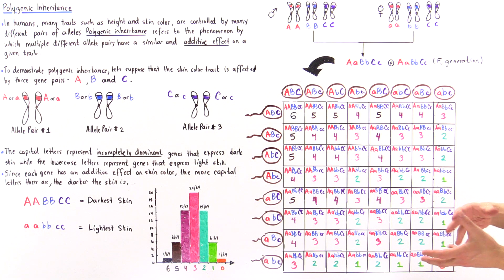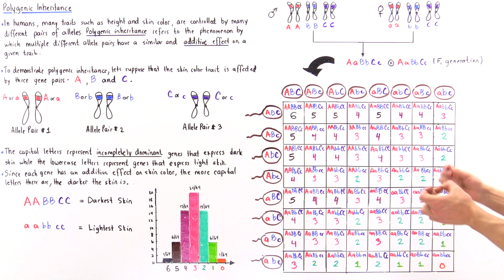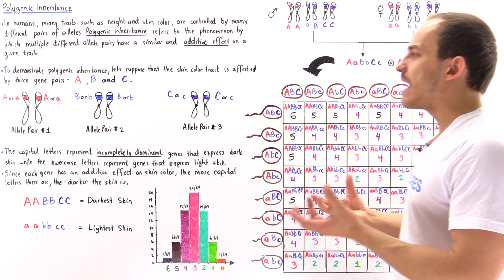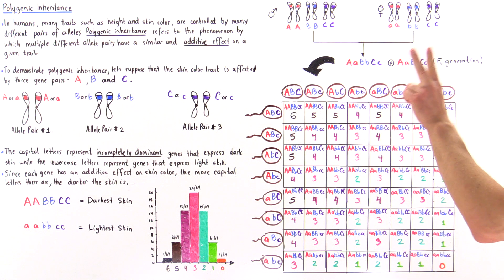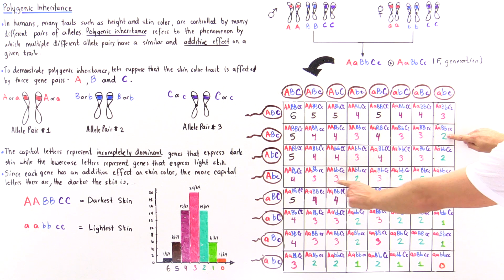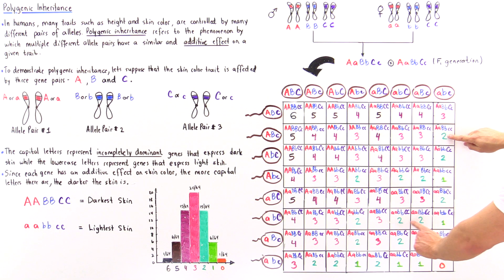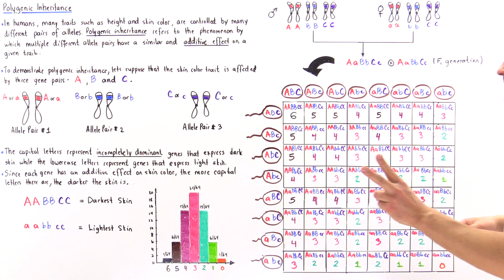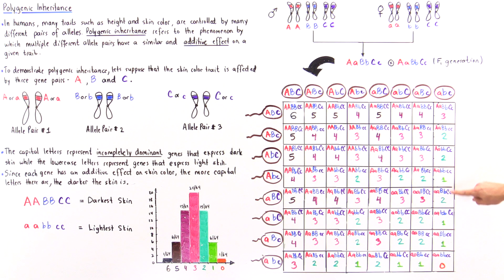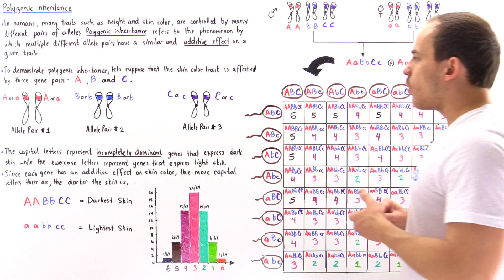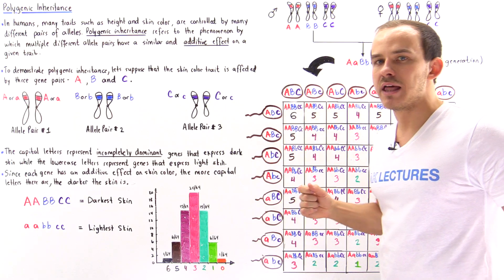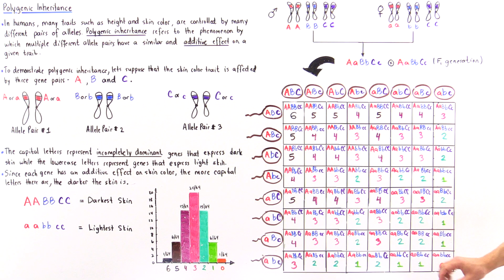Continuing with two uppercase letters, we count 15 out of 64 cases. With only one uppercase letter, we find six out of 64. And just as there is a one in 64 possibility of having all six uppercase letters, there is also a one in 64 possibility of having no uppercase letters at all. So the full distribution is: 1, 6, 15, 20, 15, 6, 1 out of 64.